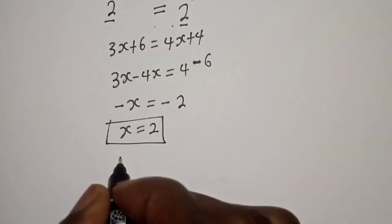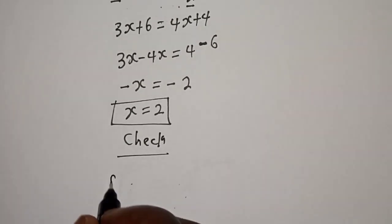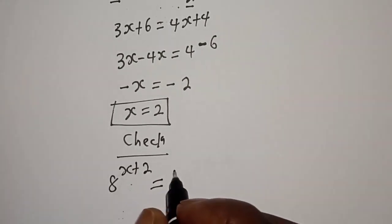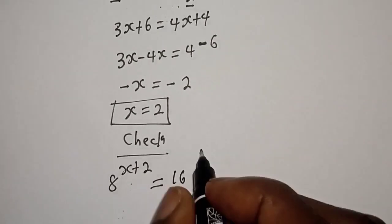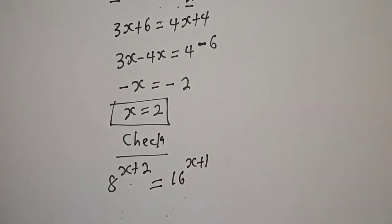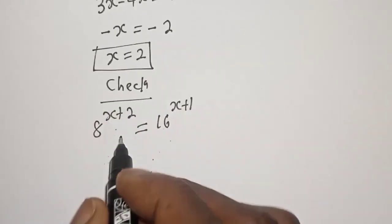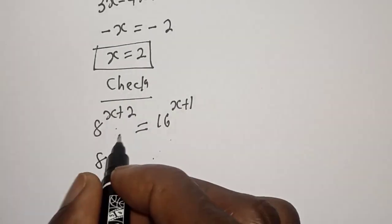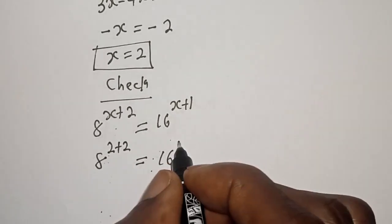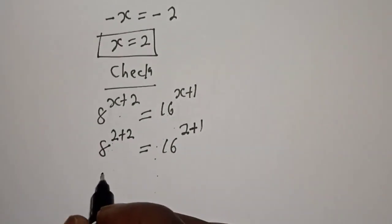Let's check: we have 8 raised to power s plus 2 is equal to 16 raised to power s plus 1. Substituting s equals 2, we get 8 raised to power 2 plus 2 is equal to 16 raised to power 2 plus 1.